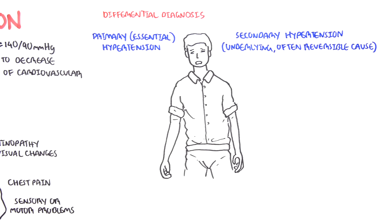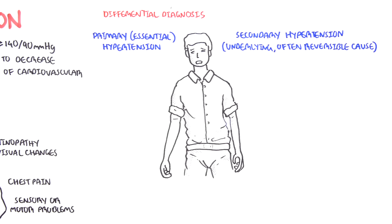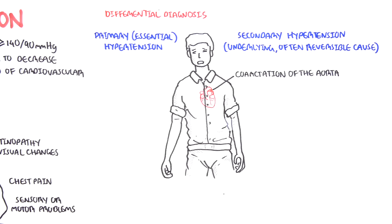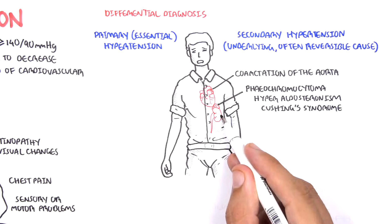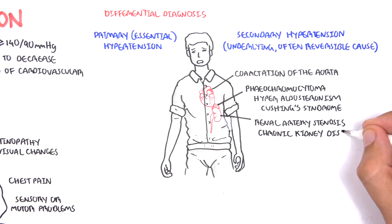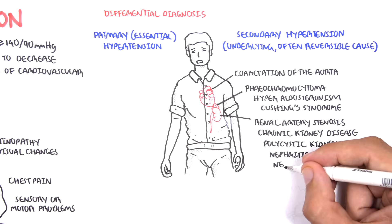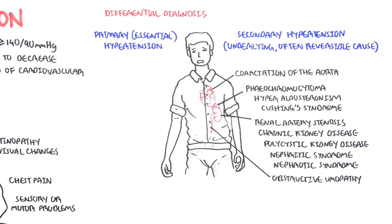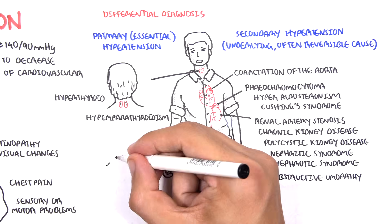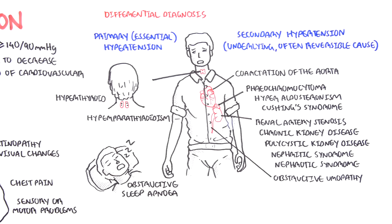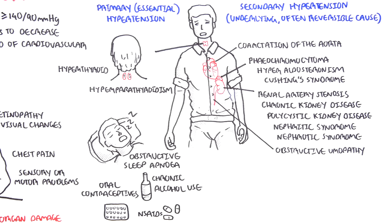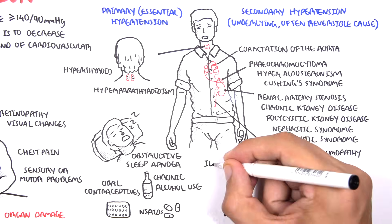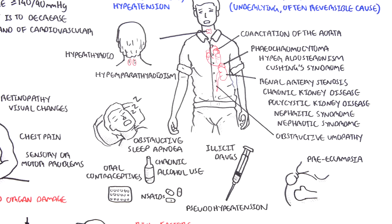Primary hypertension is basically genetics and lifestyle. Secondary causes of hypertension include coarctation of the aorta, pheochromocytoma, hyperaldosteronism, Cushing syndrome, renal artery stenosis, chronic kidney disease, polycystic kidney disease, nephritic and nephrotic syndrome, obstructive uropathy, hyperthyroidism, and hyperparathyroidism. There is also sleep apnea, chronic alcohol use, use of oral contraceptives, non-steroidal anti-inflammatory drugs, illicit drugs such as cocaine or methamphetamine, and preeclampsia in females.